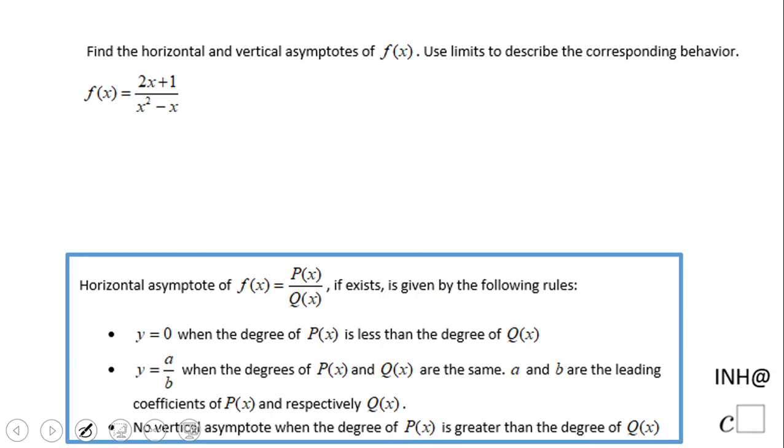Let's move to the horizontal asymptote. For the horizontal asymptote, we have three cases. For that reason, we need to look at the degree of P of x, the numerator. Here the degree is one. And the degree of the denominator, that will be two.